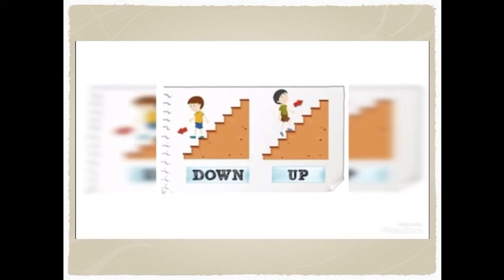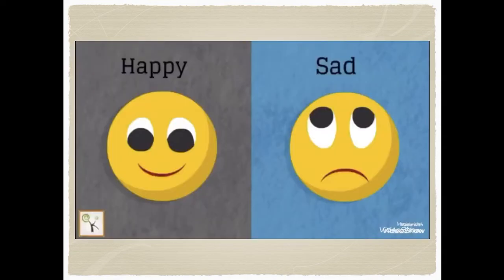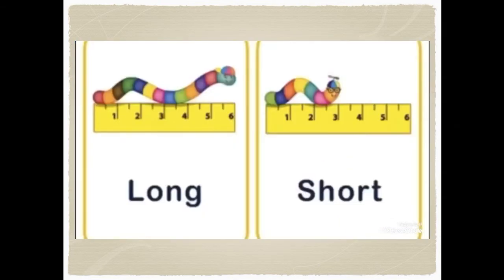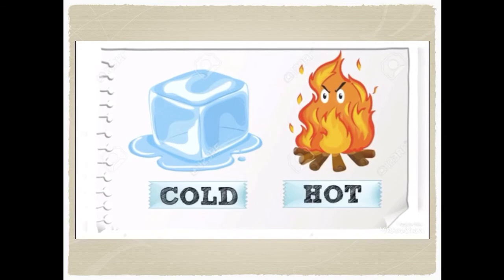What is the opposite of up? Down. Excellent. What is the opposite of happy? Sad. Excellent KG1. What is the opposite of big? Small. Excellent. What is the opposite of long? Short. What is the opposite of cold? Hot. Excellent.